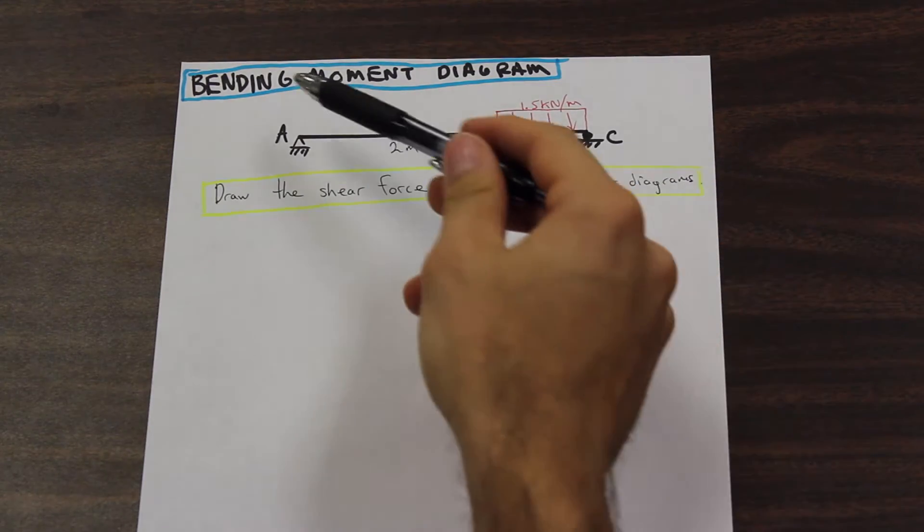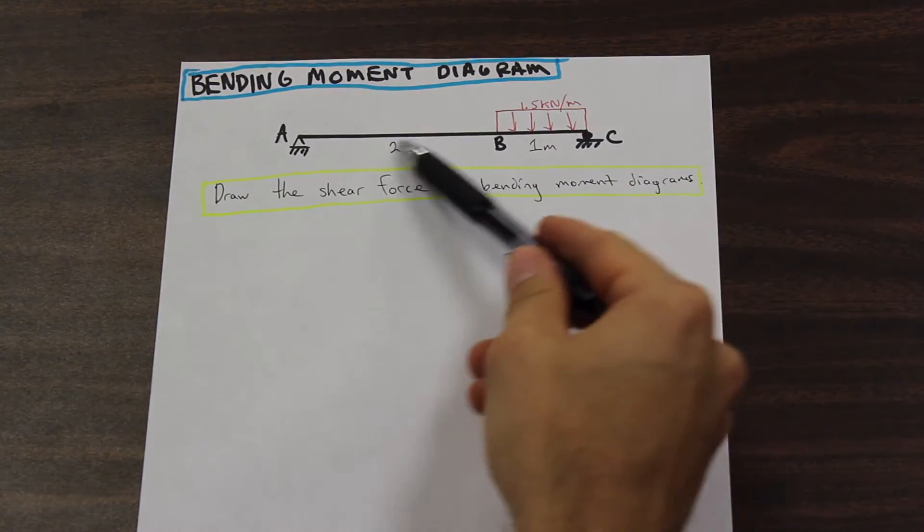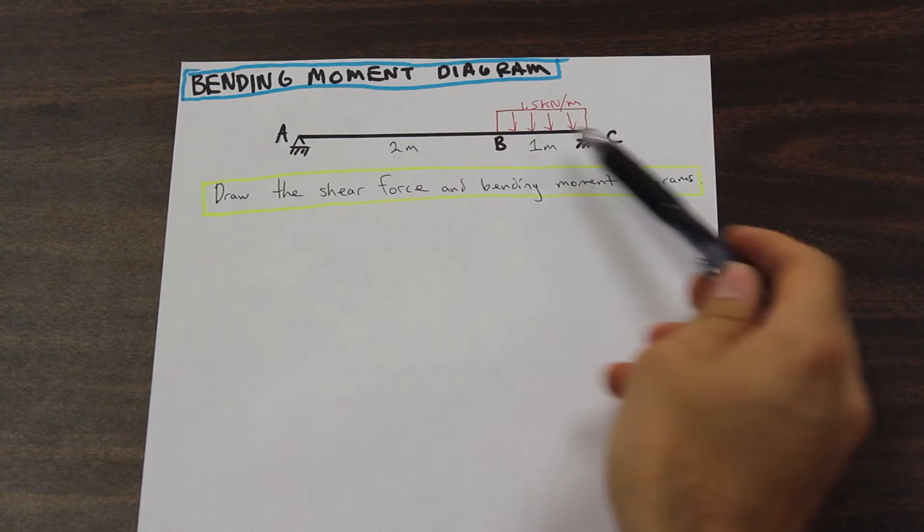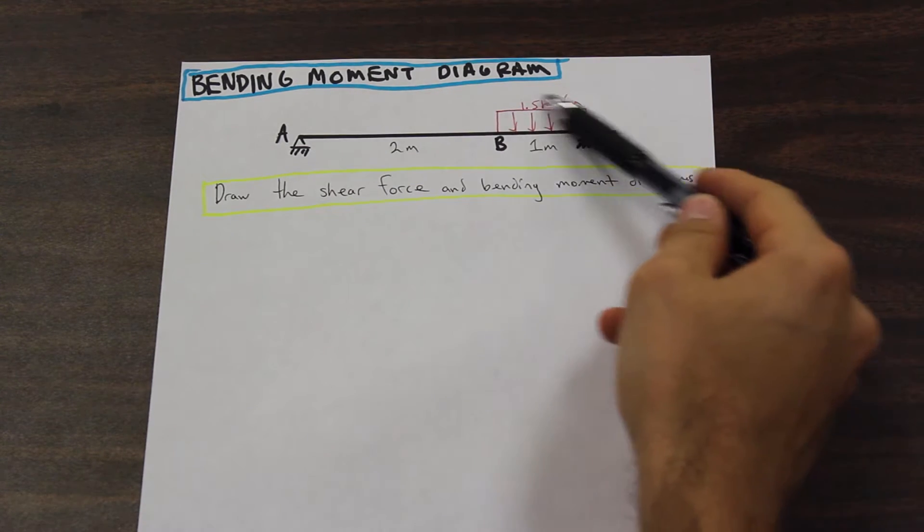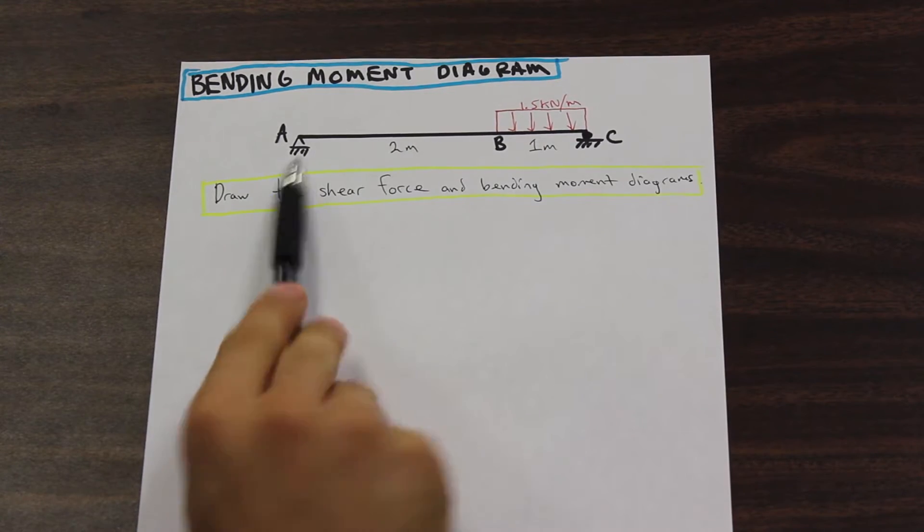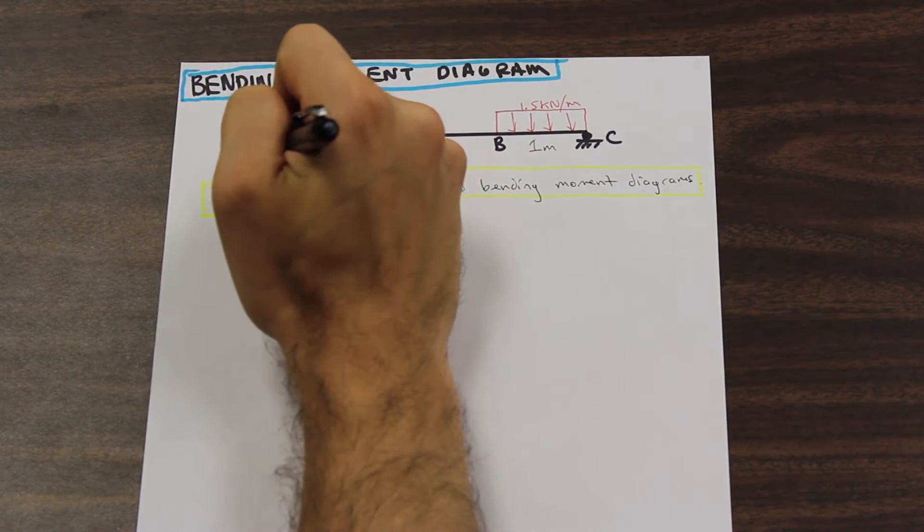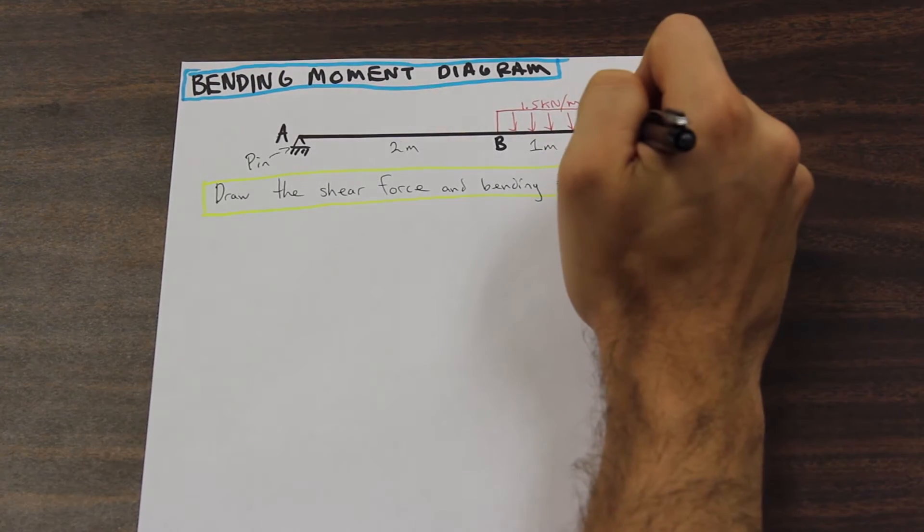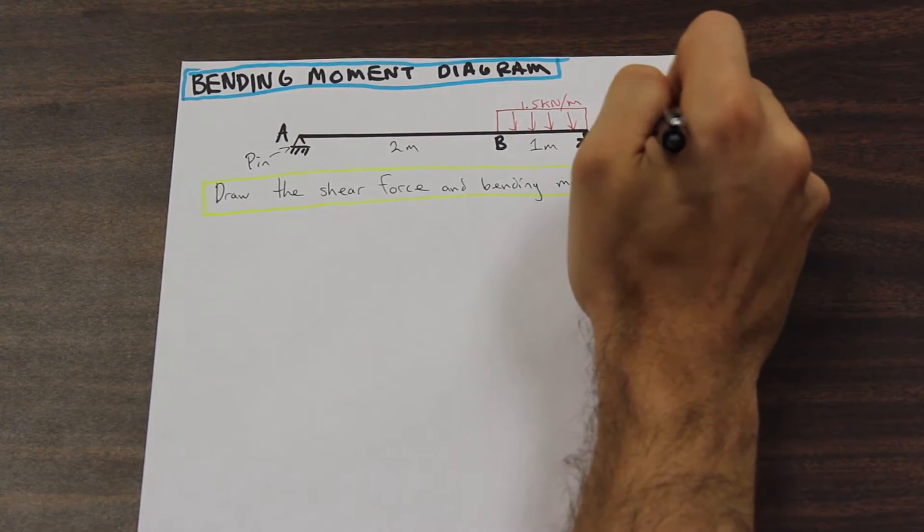So we're given a beam labeled ABC. We have two meters here and one meter here, so three meter span. We have a distributed load on the right side here. And we have two supports. We have a pin support here. Let me write that down for you. This is a pin and this is a roller.